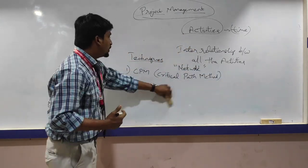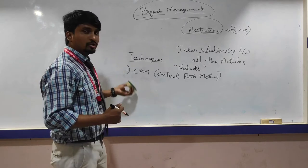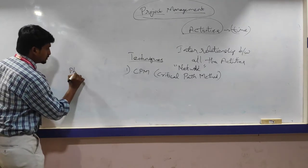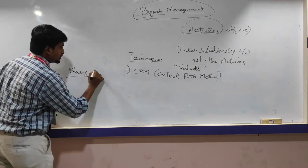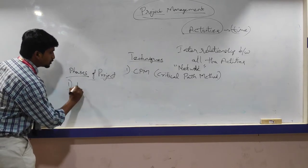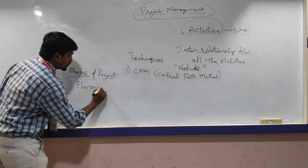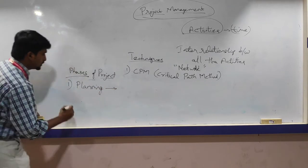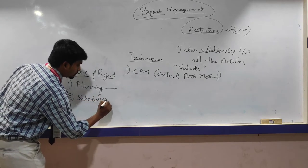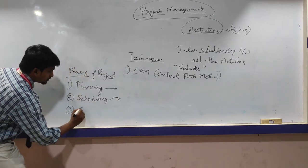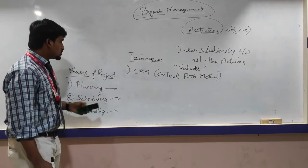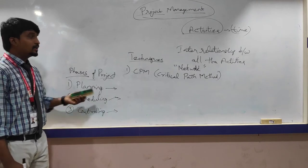First we will discuss PERT analysis. Before that, we need to consider the different phases to finish any project. The phases of any project are: first, planning; second, scheduling; and third, controlling. These are the three phases you are going to follow in designing any project.